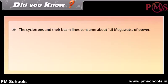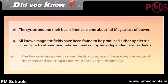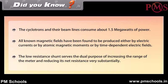Did you know? Cyclotrons and their beam lines consume about 1.5 megawatts of power. All known magnetic fields have been found to be produced either by electric currents, atomic magnetic moments, or time-dependent electric fields. A low-resistance shunt serves the dual purpose of increasing the range of a meter and reducing its net resistance substantially.